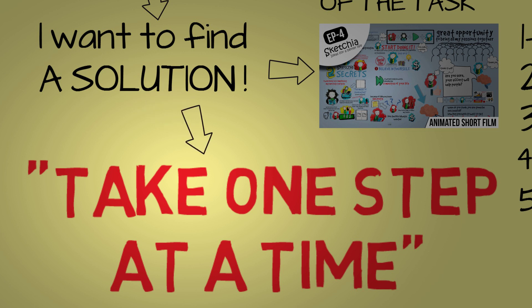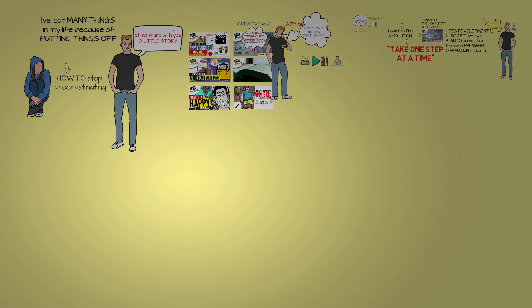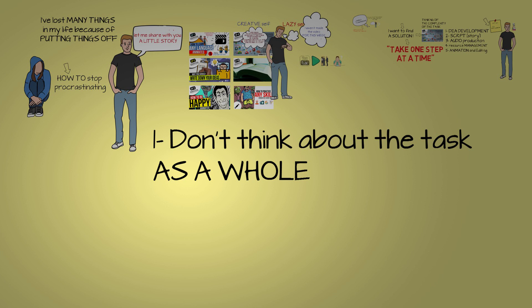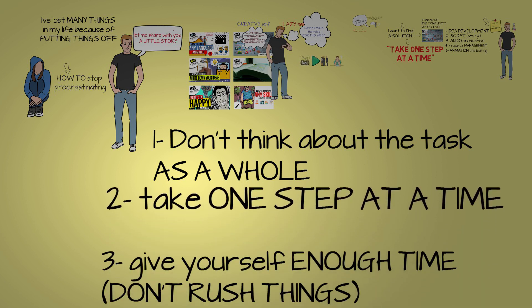And that's how I fought my biggest enemy of all time, Mr. Procrastination. Here is a summary of the entire video. Number one: don't think about the task that you want to do as a whole. Follow a step-by-step procedure. Number two: take one step at a time. Number three: give yourself enough time to execute a certain task.